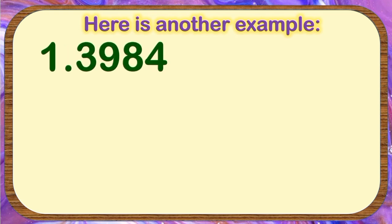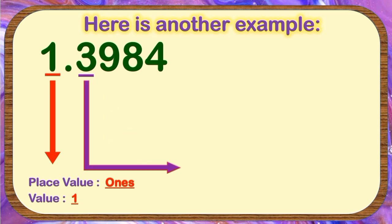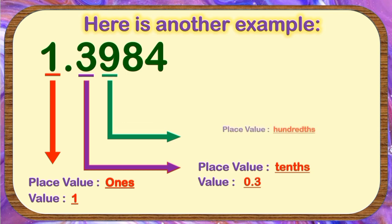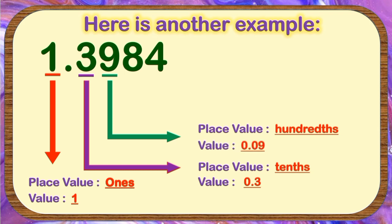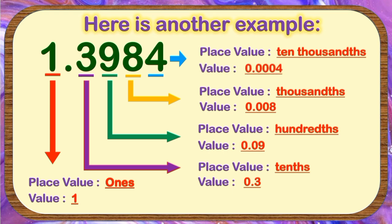The given number is 1.3984 ten-thousandths. Let us identify the place value and the value of each digit. Starting with digit 1: it is located in the ones place and the value is 1. 3 is in the tenths place and the value is 3 tenths. 9 is in the hundredths place and the value is 9 hundredths. 8 is in the thousandths place and the value is 8 thousandths. Lastly, the digit 4 is positioned in the ten-thousandths place and the value is 4 ten-thousandths.